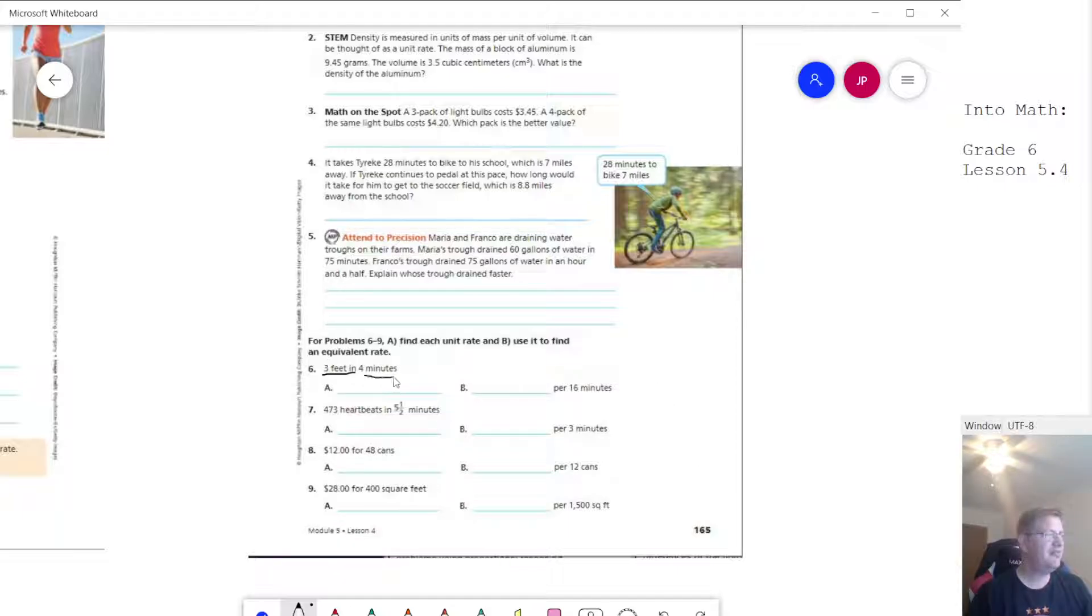If I have three feet in four minutes and I want to know how many feet I get in 16 minutes, well, that's just a simple multiplication problem. So I can multiply this number times the number I need to get up to 16 to get the answer. So for instance, that would give me 12 feet in 16 minutes. And then we can do three divided by four to find the unit rate. We can have fractions for the unit rates.